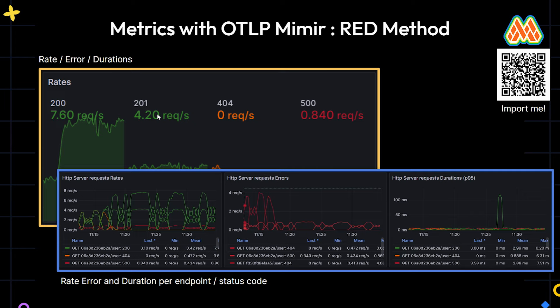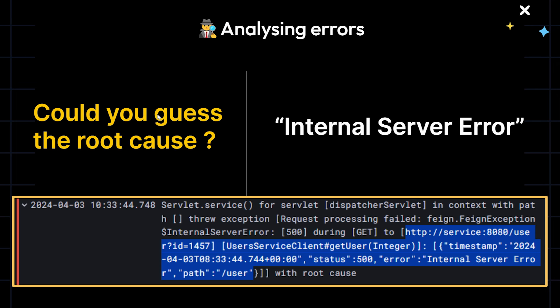The problem is that at some point we have 8% to 10% of errors, but we are not able to see the root cause. If we look at the logs, could you guess the problem from the client application's point of view when you have internal server errors? If I go to the details, I have an empty root cause or something not really relevant. At that point, it's important to jump to the other component, but as soon as you have more dependencies, you have to jump to the next logs and it's very painful.